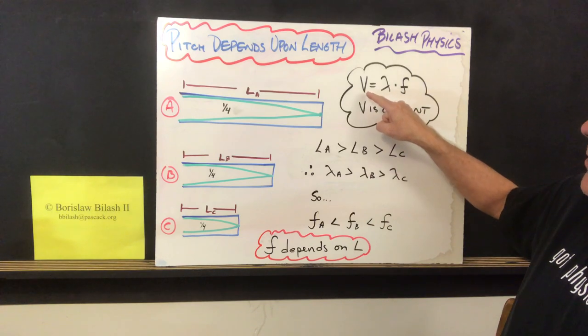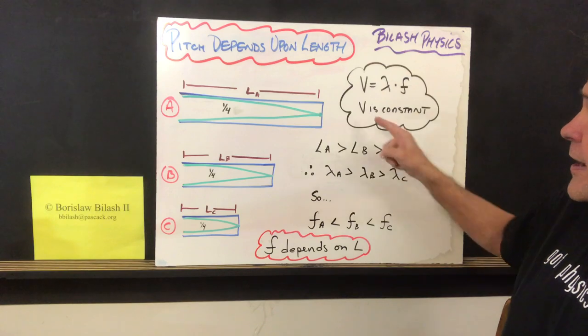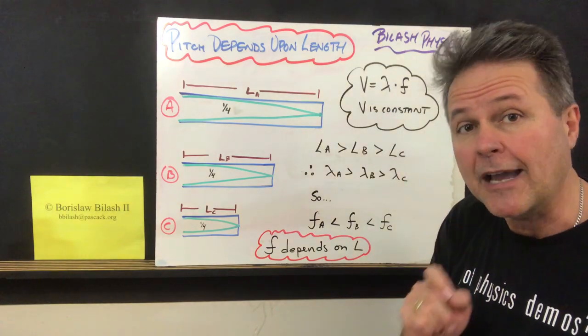Now we know that the formula for sound is the speed of sound equals wavelength times frequency, and keep in mind that the speed of sound is going to be constant.